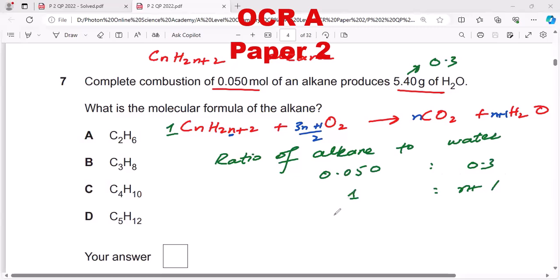So I need to solve it. Look at the value of n. The ratio of alkane to water is this, similarly the ratio of alkane to water is this. By making this equation, when I solve it, n equals 5. N equals 5 means pentane, so option D.